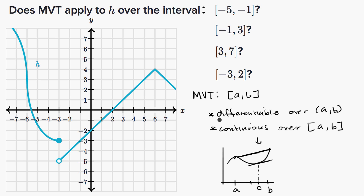In this video, we're not trying to identify the c's — we just want to say, can we apply the mean value theorem? Let's look at the first interval, the closed interval from negative five to negative one. Are we differentiable over the open interval? Well no — we have a discontinuity here that makes it not differentiable. And of course, if we're not continuous, we're not differentiable either. So this discontinuity actually violates both conditions, and for this first interval, the mean value theorem does not apply.